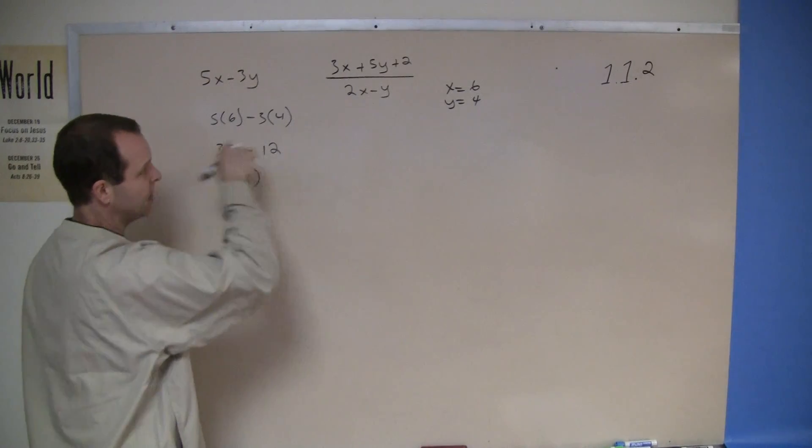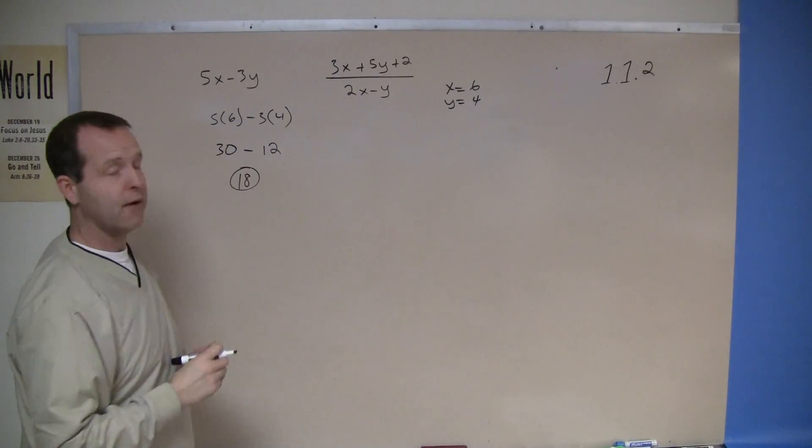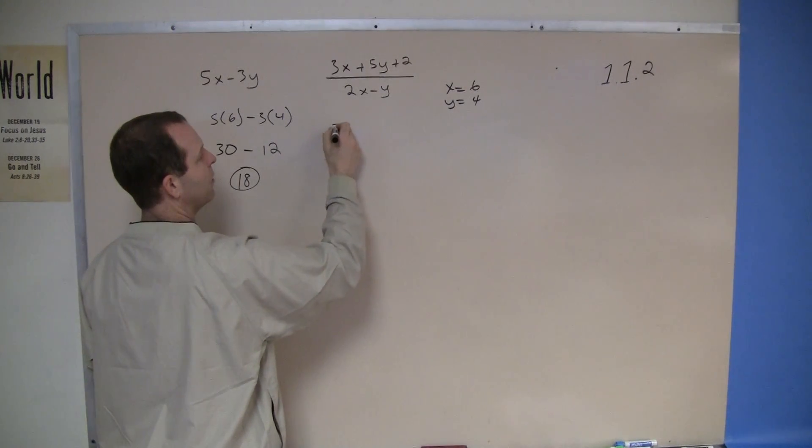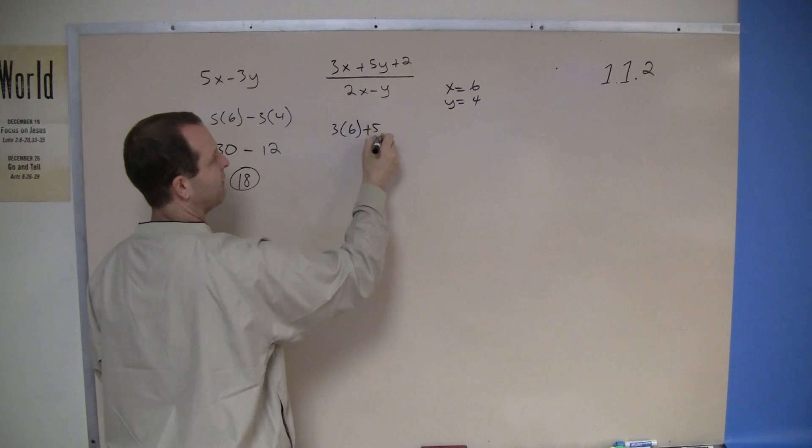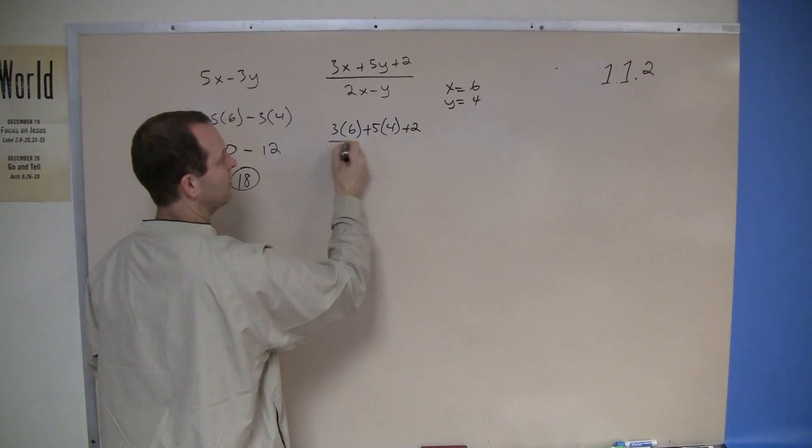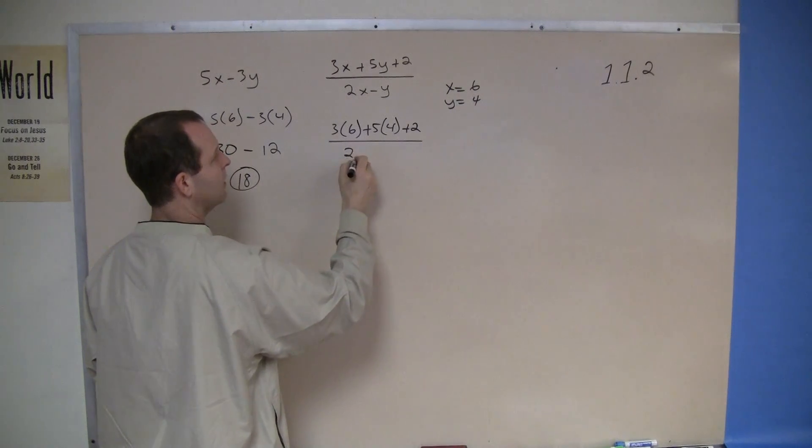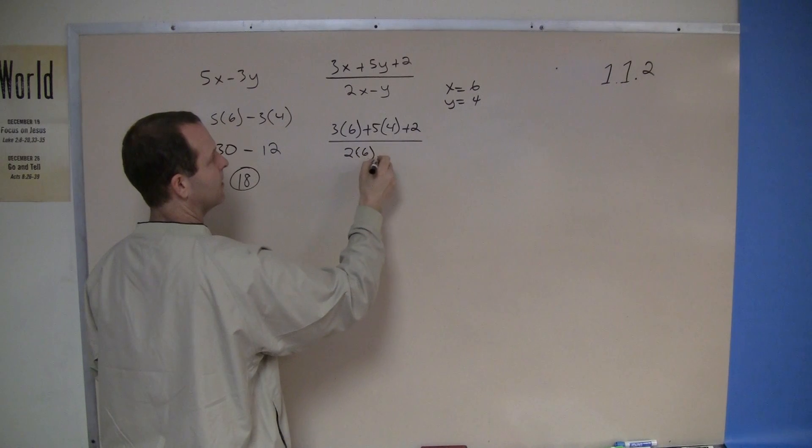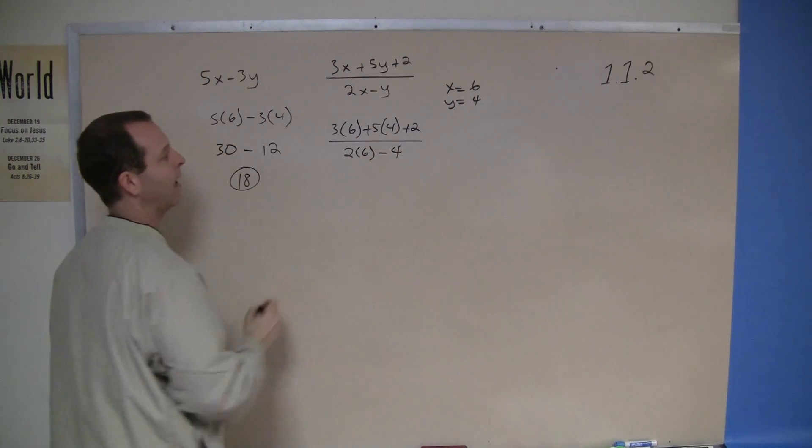On the second expression, again, everywhere I see the variable, I'm just going to swap it out. So 3 times the x, which is a 6, plus 5 times a 4, plus a 2, all over 2 times x, 6, minus the y, which is a 4.